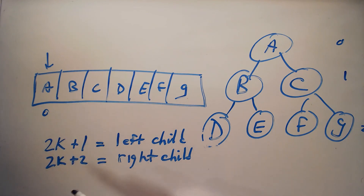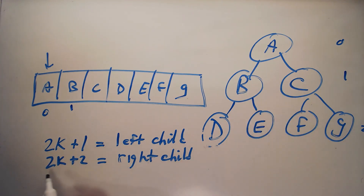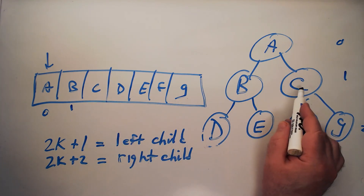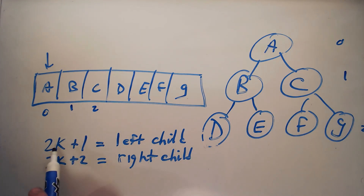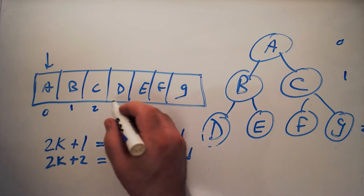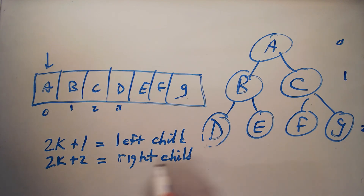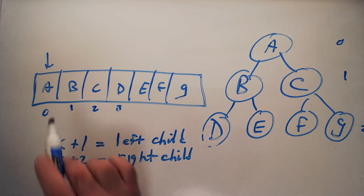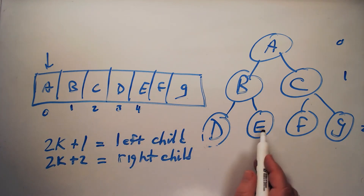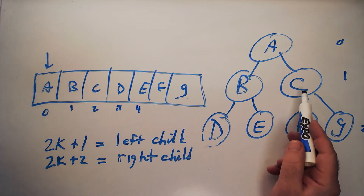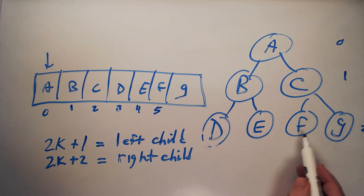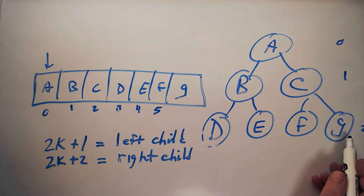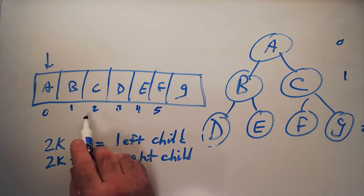B is the left child of A, satisfying the math. The right child of A is at 2K+2 = 2. The left child of B (K=1) is at index 3, where we find D. The right child of B is at 2×1+2 = 4, where we find E. Node C is at index 2, so its left child is at 2×2+1 = 5, which is F. G is the right child of C at index 2×2+2 = 6.